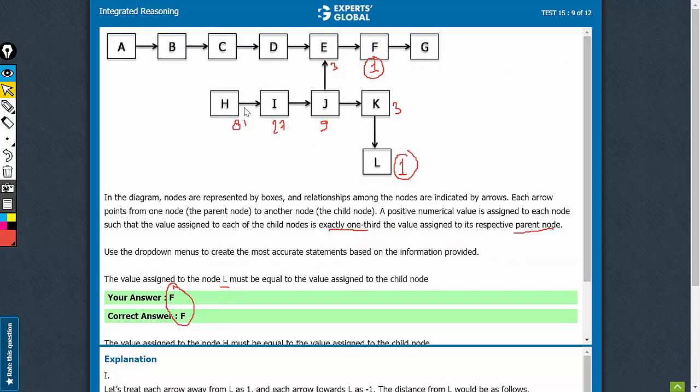H has to be equal to what? Let's continue the calculation we were doing. Let's see if we get 81 once again. 3 is the child, D is parent to 3, so this must be 9. Parent to 9 is 27.